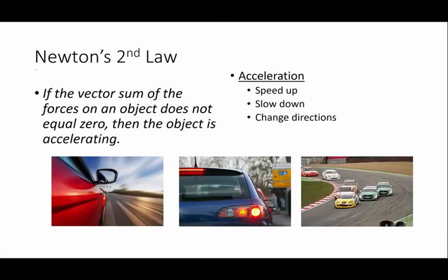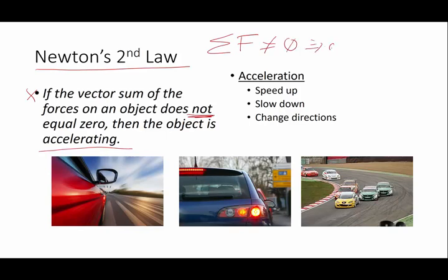Newton's Second Law says this: If the vector sum of the forces on an object do not equal zero, then the object is accelerating. This can be simplified by saying, if the sum of the forces on an object do not equal zero, then you're going to have acceleration. And if you remember what we talked about for acceleration, there are three ways to accelerate in physics: you can speed up, you can slow down, you can change directions.